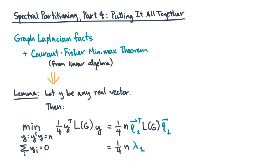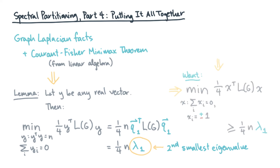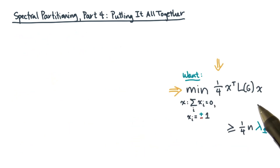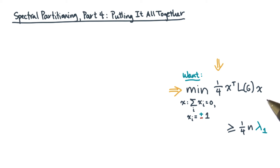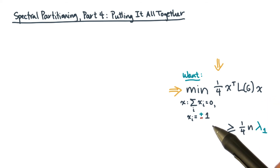So what does this mean? Let's go back to the original optimization problem. Our most recent fact tells us that the optimal value is at least this quantity. To turn all this into an algorithm, you need one more idea. Choosing x to be q1 gives us a lower bound on the thing we want. But how do we take a q1 and actually turn it into something that is a partition vector? In other words, something that has plus or minus 1 values in all the entries.